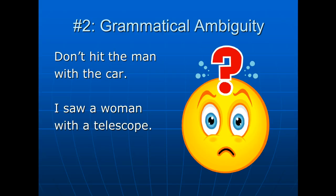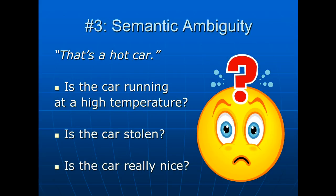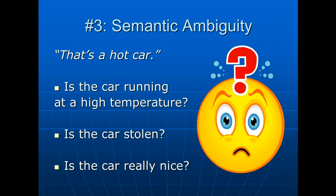The third kind of ambiguity linguists have identified is semantic, and it is the most common. If I say 'that's a hot car,' what do I mean? Is the car running at a high temperature? Is the car stolen — because 'hot' is slang for stolen? Or am I saying the car is really attractive, since 'hot' is used as an adjective to describe things that are appealing? We don't know unless we get more information from the writer or speaker. This is semantic ambiguity — it makes sense grammatically, it sounds right, but we're still confused about the meaning.